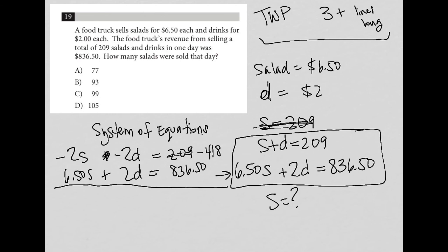So here I'd end up with 4.5S. Here the 2D crosses out, which is what I was looking to happen. And then here negative 418 plus 836.50. This is the calculator section. I do recommend that you use your calculator instead of doing mental math. So negative 418 plus 836.5.